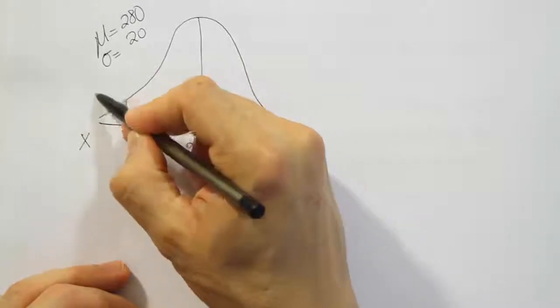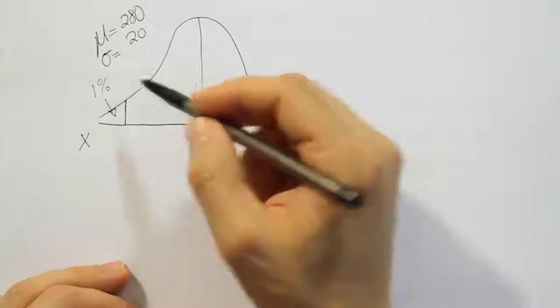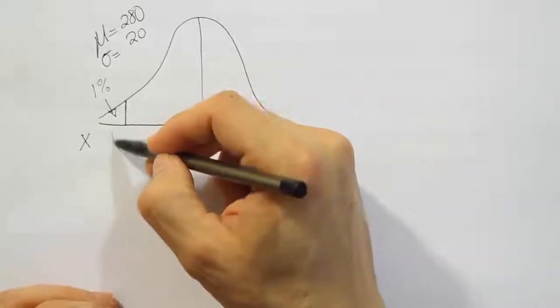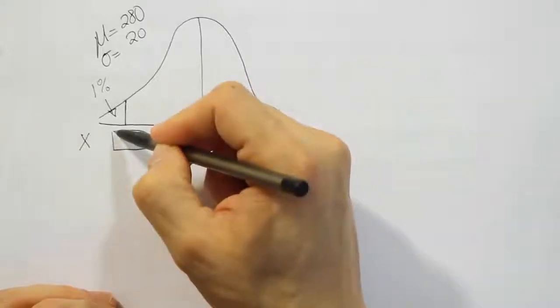This would be the shortest 1%. So there's 1% of the population of women in this tail here. And what we want to do is figure out what pregnancy length cuts that off from the rest of the other 99% of pregnancies that are longer.